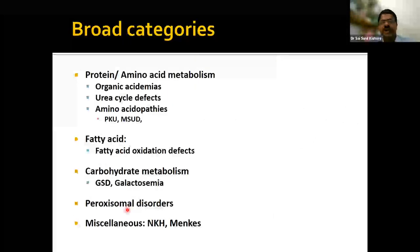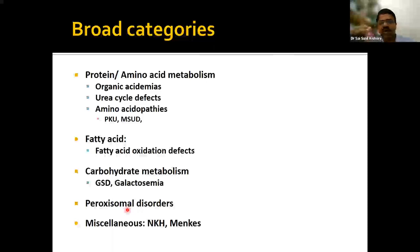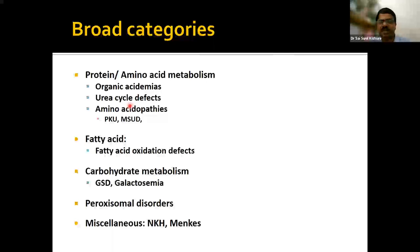The broad categories of inborn errors are: protein or amino acid metabolism — including organic acidemias, urea cycle defects, and amino acidopathies; fatty acid metabolism — fatty acid oxidation defects; carbohydrate metabolism — galactosemia and glycogen storage disorders; and other disorders such as peroxisomal disorders, non-ketotic hyperglycinemia, and Menkes disease.